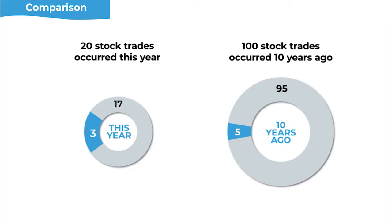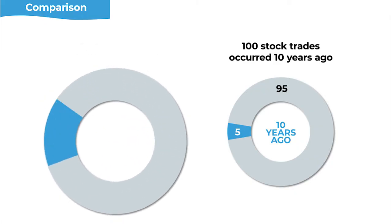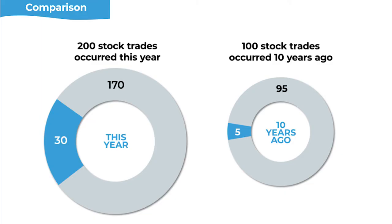That's the kind of change we want to look out for. What do we need to do to guarantee that the comparison within the argument is valid? If we change it so there are 200 stock trades this year, and 15% involve fraud, that's 30 fraudulent trades versus 5 ten years ago. A bigger percentage of a bigger amount equals a larger overall amount. We have to be careful about the overall size of the group to guarantee that the conclusion follows. We'll think in terms of how to adjust the comparison such that we guarantee the conclusion.